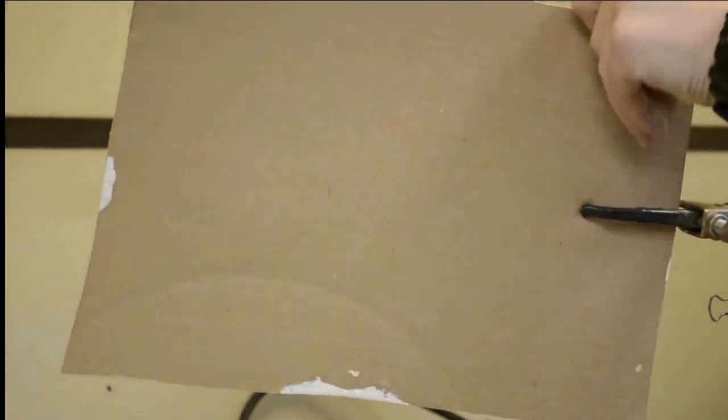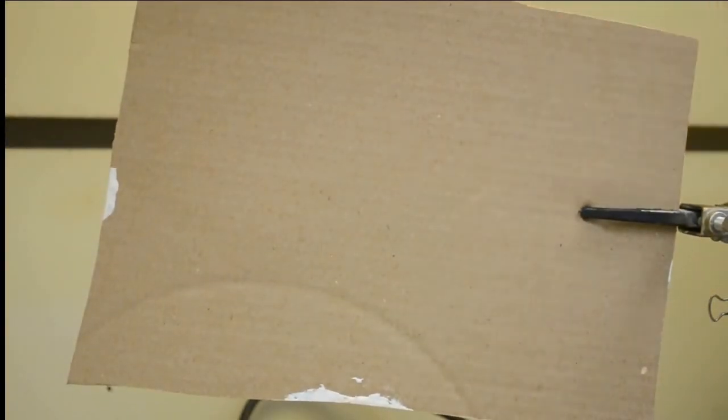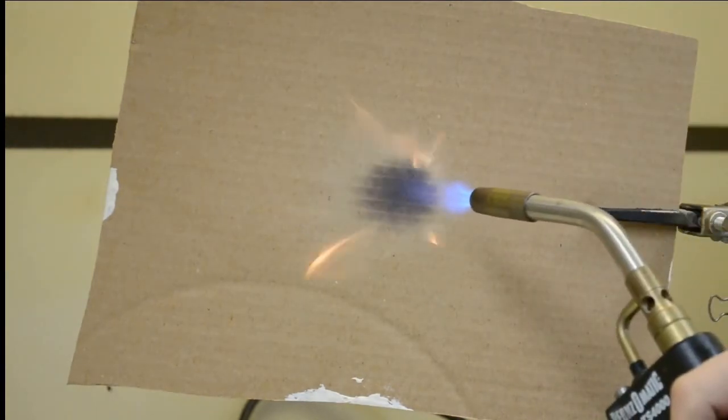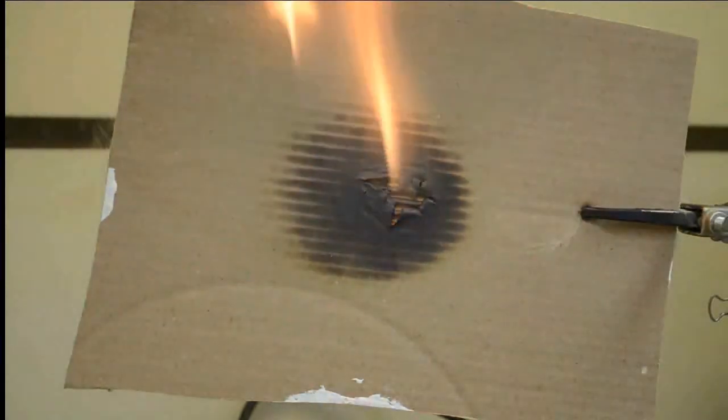As the cardboard is reversed, the substrate is shown to be fully intact and unaffected by the flame. However, when the uncoated cardboard is exposed to the open flame, ignition is almost immediate.